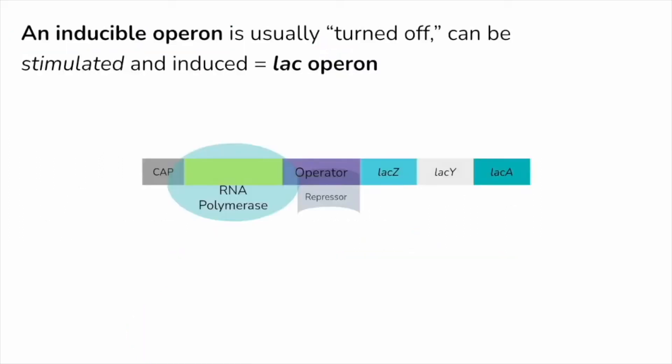Let's start with inducible operons or something like the lac operon. In its usual state, we do not have transcription happening. That's mostly because we have a repressor here that's bound to a section called the operator in this operon. Now the purpose of these genes, lacZ, lacY, and lacA, is to provide instructions for the cell to build parts of proteins to digest lactose. If there's no lactose in the cell, these genes don't need to be turned on because we don't need any enzyme to digest lactose.